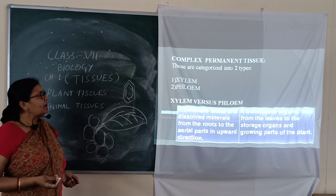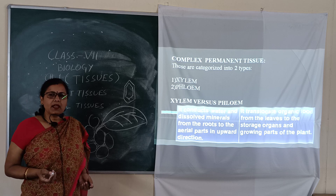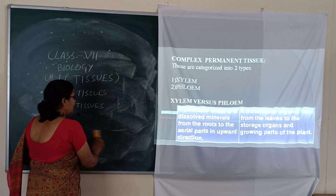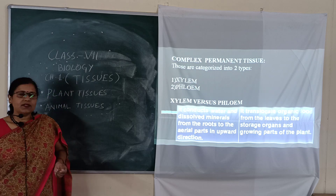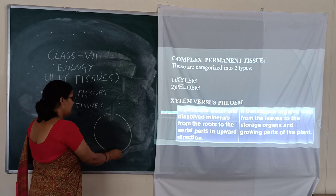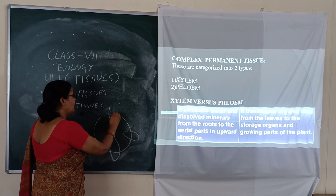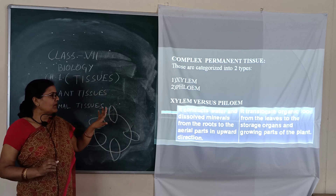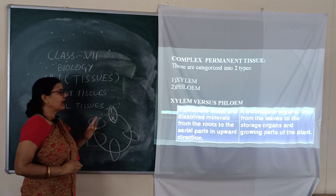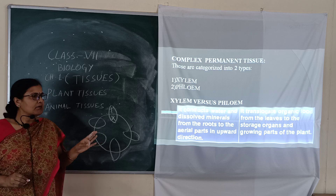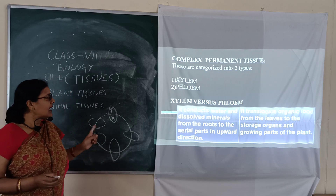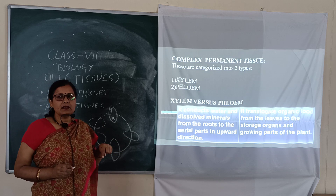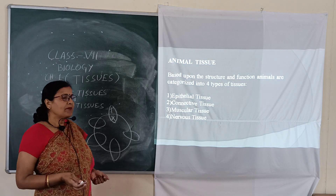Complex permanent tissue is of two categories: xylem and phloem. These are complex, permanent types of tissue that are not able to divide themselves. They are present in the vascular bundle — when you cut a trunk, you can find this vascular bundle. Xylem conducts water and minerals from the root to the leaf, while phloem conducts food prepared in the leaf to all parts of the plant.